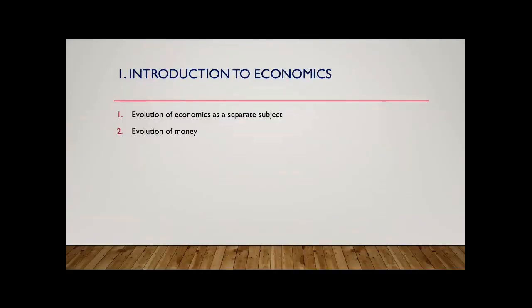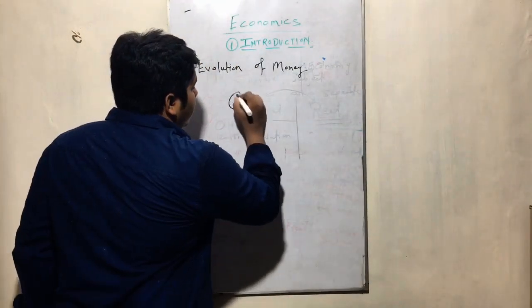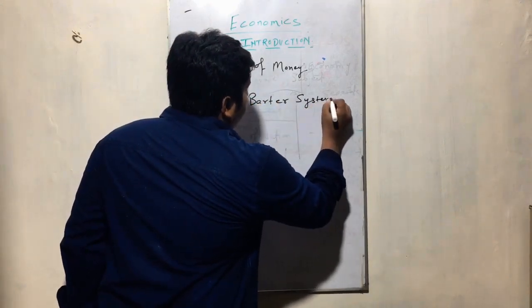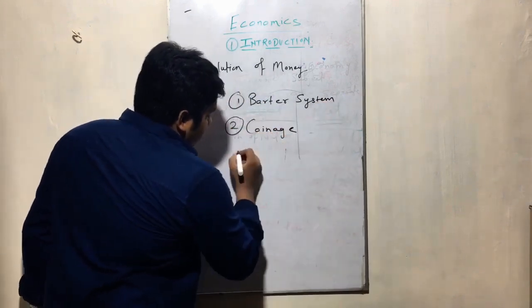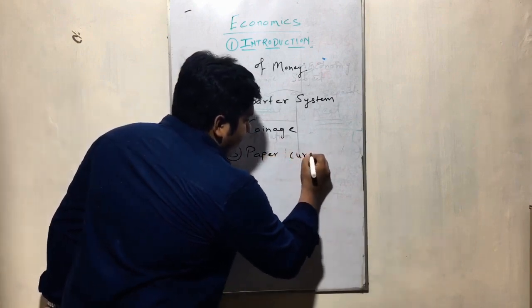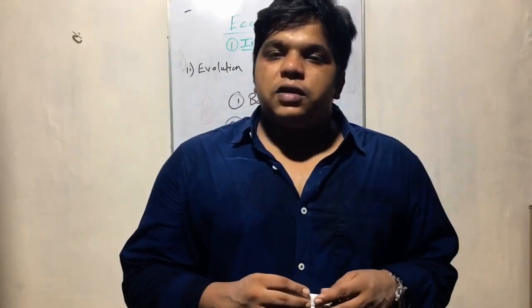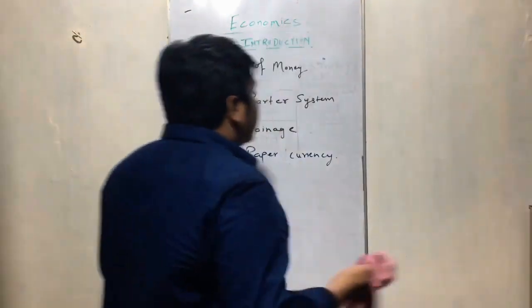Now let's go to the second topic of the introduction session: the evolution of money. From history, we have three forms of money. The first is the barter system, the second is coinage, and the third is paper currency, which is the latest one. Let's first understand the barter system and then move to coinage and the evolution of paper currency.